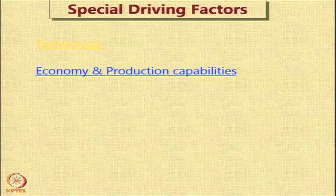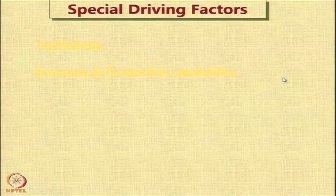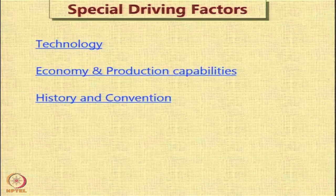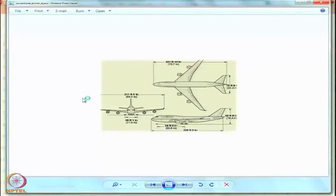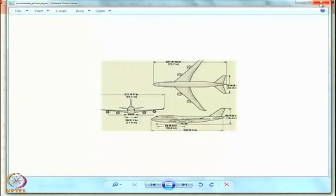The economy and the production capabilities available are also a driving factor in choosing the layout. We can see the whole process of assembling the aircraft along a production line. Sometimes the layout is decided purely by history and convention. For instance, this is a typical configuration which has become fairly standard for an airliner — the conventional layout perfected by the Boeing aircraft company, first seen in the Boeing 707, and now almost every airliner has a similar configuration with wing-mounted engines and a conventional tail.